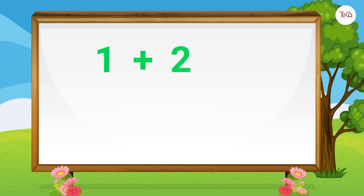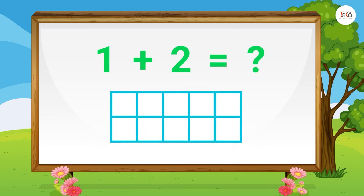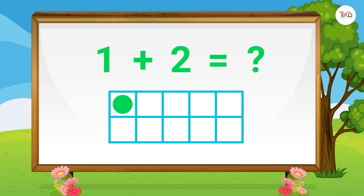First, 1 plus 2 equals... We draw 1 dot, then 2 dots. Let's count all the dots to find the sum. Here we have 1, 2, 3. 3 dots in total. So 1 plus 2 equals 3.